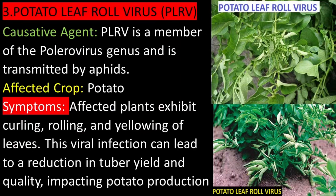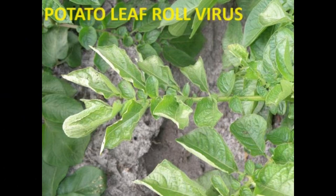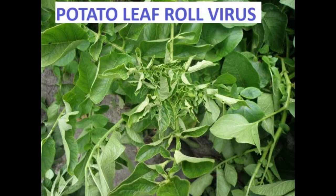Potato Leaf Roll Virus has a causative agent in the clorovirus genus and is transmitted by aphids. The affected crop is Irish potato. Affected plants exhibit curling, rolling, and yellowing of leaves. This viral infection can lead to a reduction in tuber yield and quality, impacting potato production.